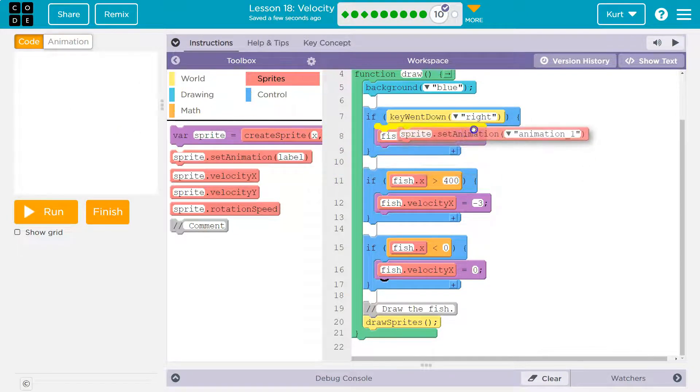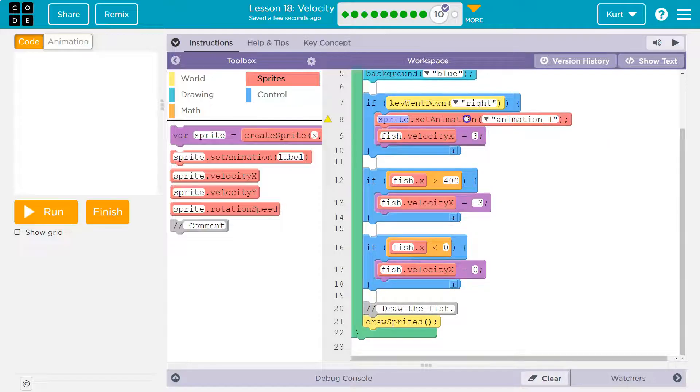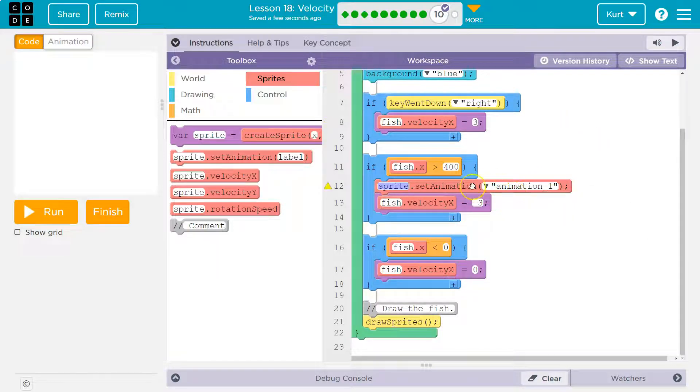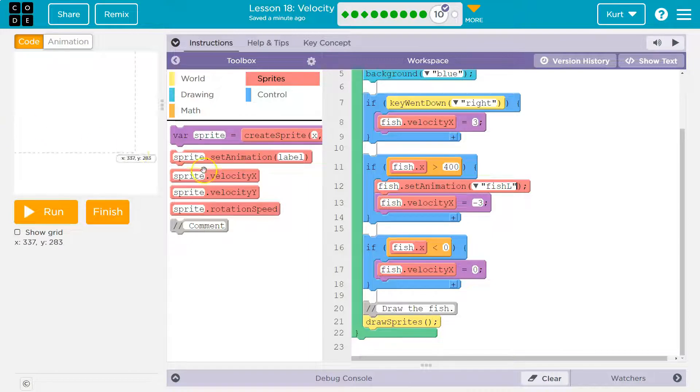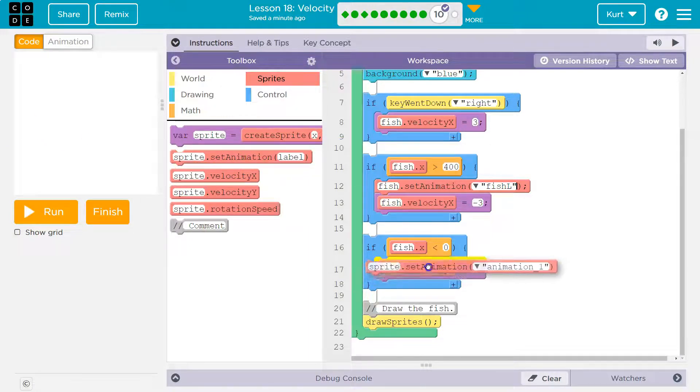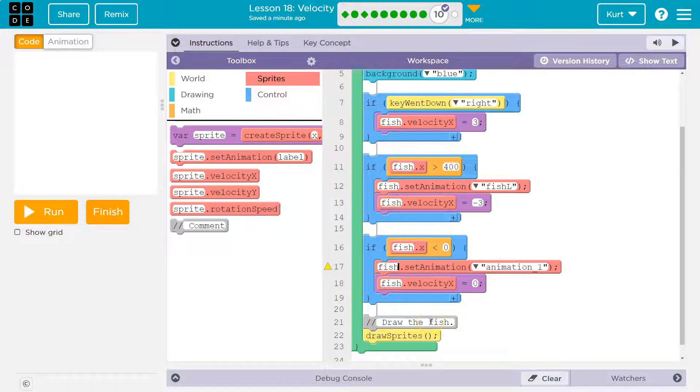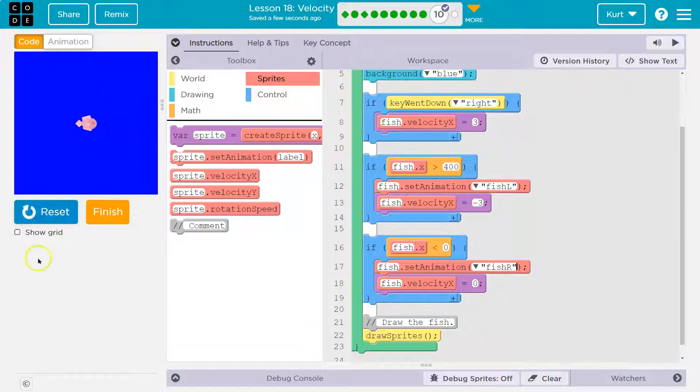So start moving to the left right here. When it hits the right side of the screen, it's going to start moving to the left, and I'm going to do fish set animation fish L. Now, when it hits this side of the screen, it stops. Instead of seeing its tail, why don't we turn them around so we can see the head of the fish? So let's do fish set animation fish R. Let's try. Awesome.